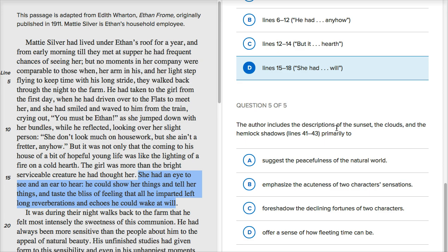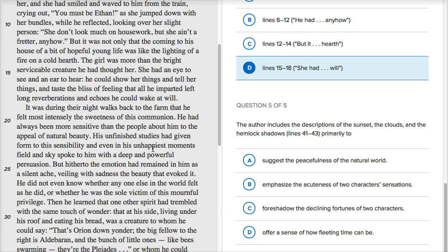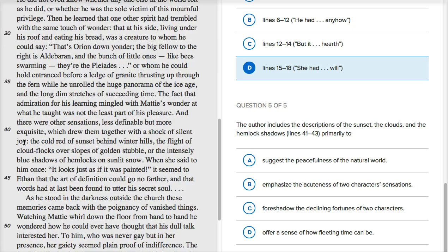The author includes the descriptions of the sunset, the clouds, and the hemlock shadows. Hemlock is a type of plant. So, the shadows of the plants, it's where nature. So, lines 41, 43. So, let's go down to lines 41, line 41, 43. And I'll start reading a little early. And there were other sensations, less definable, but more exquisite, more exquisite. So, before he's talking about kind of science of the stars and being able to think about what's in the fossil record and all of that.